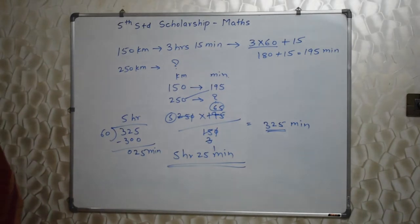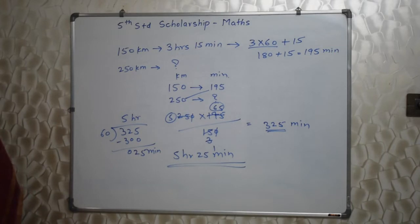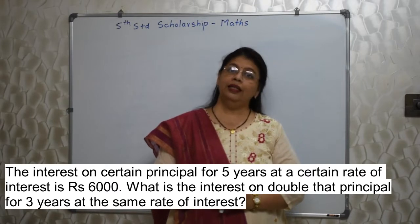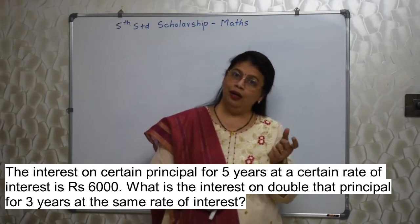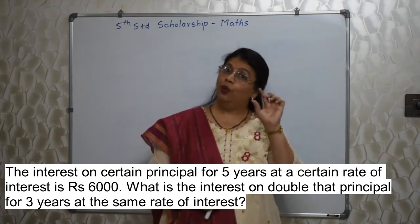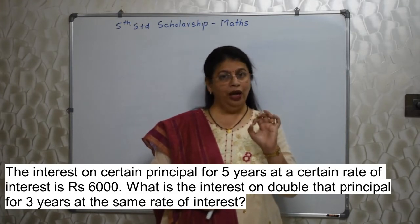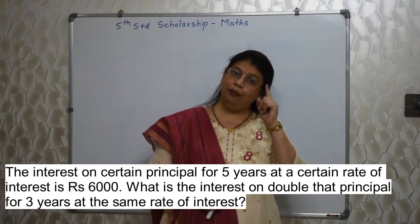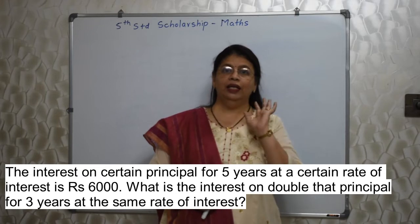Isn't it interesting? Let's go ahead. The interest on a certain principal for 5 years at a certain rate of interest is Rs. 6000. What is the interest on double that principal for 3 years at the same rate of interest? In these kinds of sums there will be a word — double, or half, or 3 times — and you have to keep track of that word. It is very very important. You cannot afford to ignore it. Keep that word in mind before selecting a final answer.